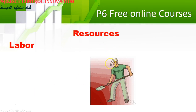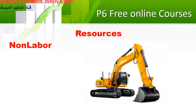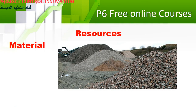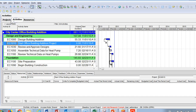In P6 you have what's called OBS and also resources, so you can add all your resources and staffing — engineers, foremen — it is called labor in P6. Non-labor is the equipment — you can see this equipment here, like excavators — this is a non-labor resource. Material is things like cement or gravel — whatever material you purchase for the project is called material. I've opened a live schedule that we have for an engineering office.